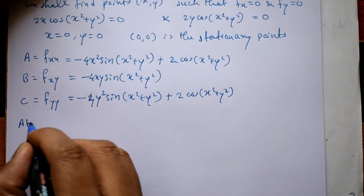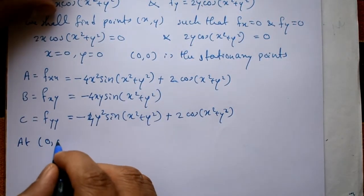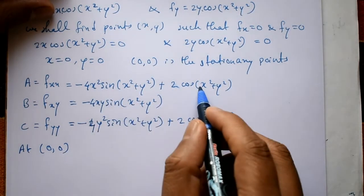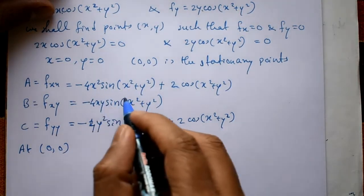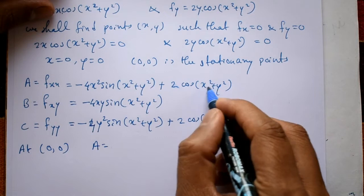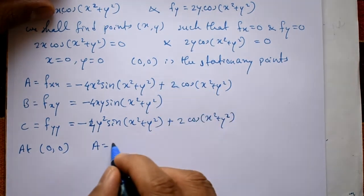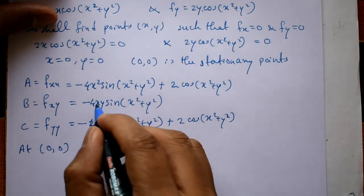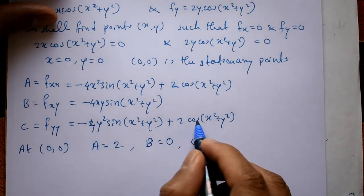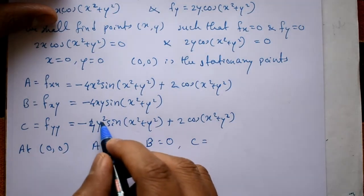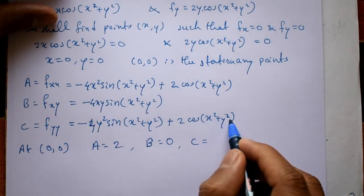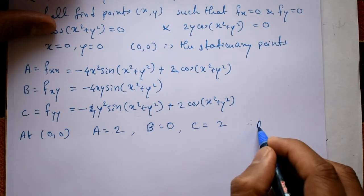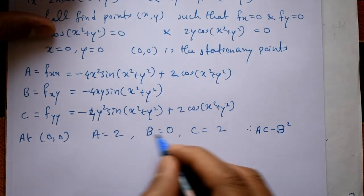Now evaluate at the stationary point (0, 0). Substituting x = 0, y = 0: A = 2·cos(0) = 2. For B, x·y = 0, so B = 0. For C, y = 0 and cos(0) = 1, so C = 2.